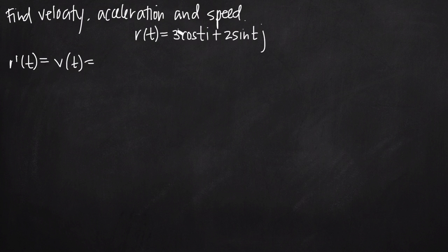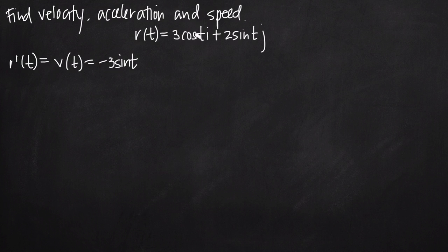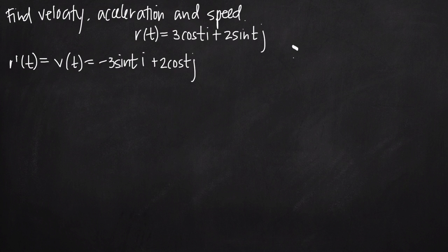When we take the derivative of a vector function with i, j, and k components, we only take the derivative of the coefficients. The derivative of 3cos(t) is negative 3sin(t), because the derivative of cos(t) is -sin(t), so that negative comes out in front and the 3 stays: -3sin(t)i. Then the derivative of 2sin(t) is 2cos(t)j. There's no k component — essentially it's plus 0k, which drops away. So our velocity function is v(t) = -3sin(t)i + 2cos(t)j.